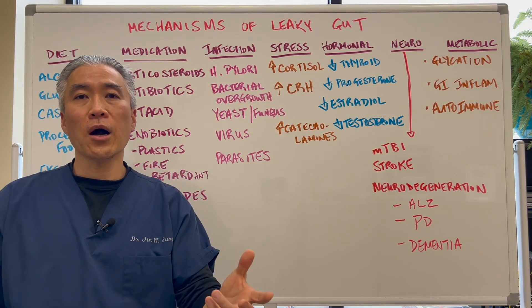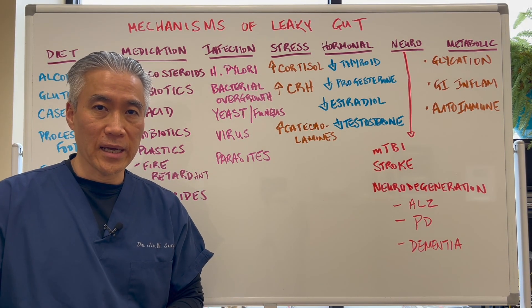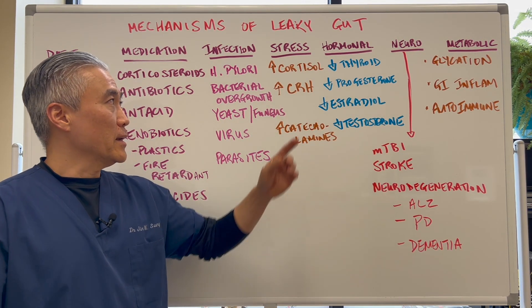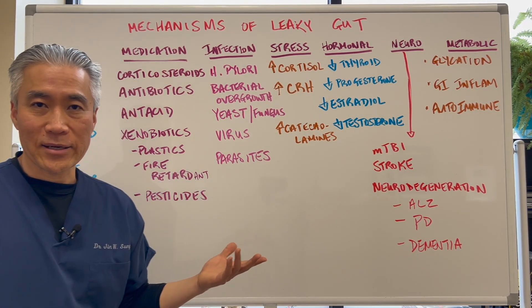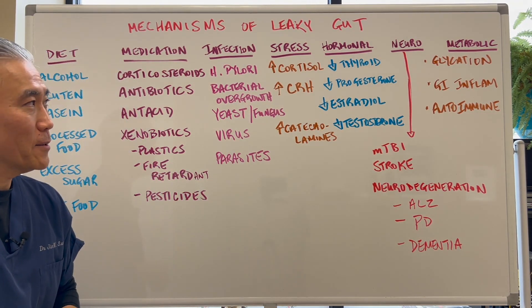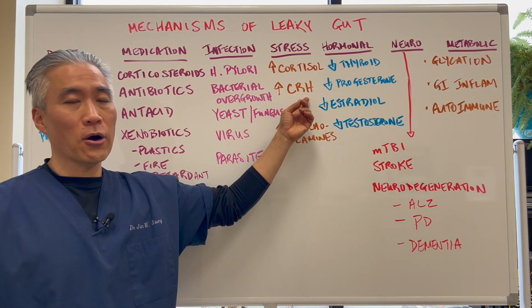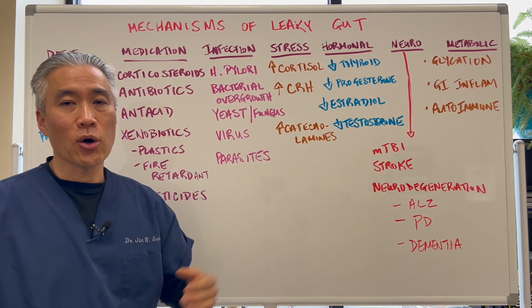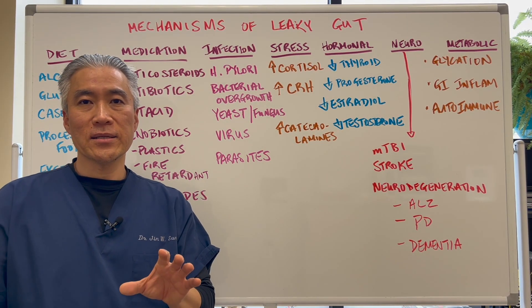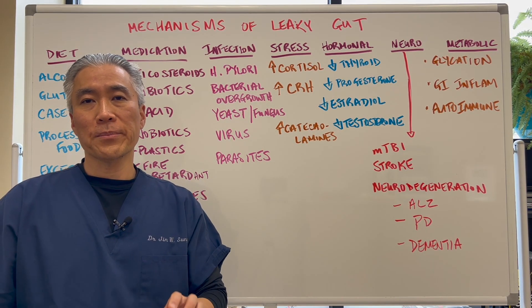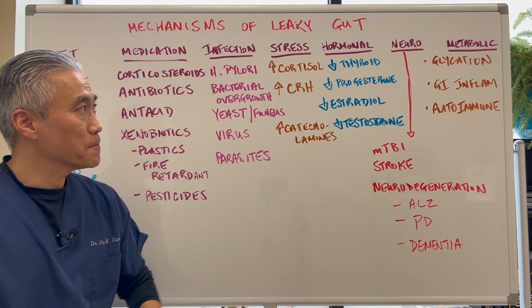Stress over a long period of time can also cause damage. It increases cortisol, basically like a steroid. It also increases CRH and catecholamines. These, over a prolonged period of time, can cause damage to the gut lining.